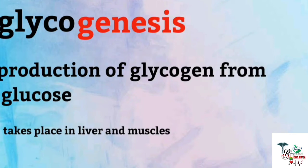Glycogenesis — 'genesis' means production, and 'glyco' refers to glycogen. So glycogenesis is glycogen production. It is very simple: glycogen production from glucose is called glycogenesis.